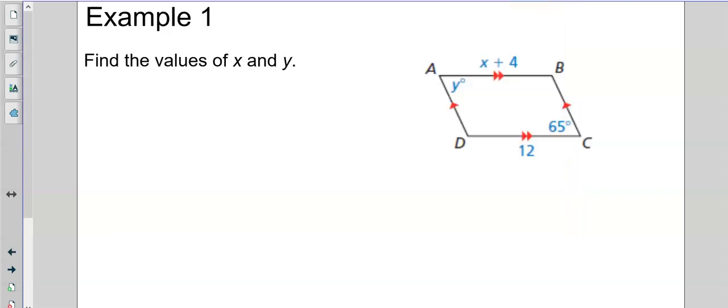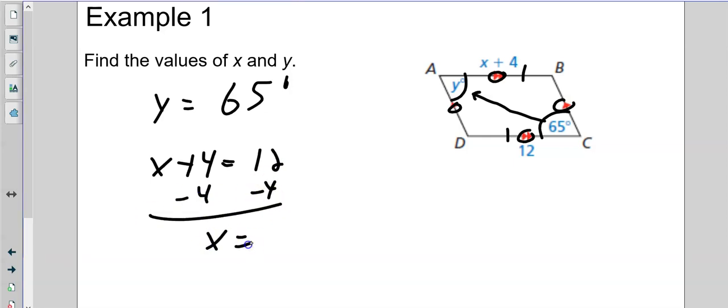So applying this, we have an angle here. The angle directly opposite is over here, so therefore, y is 65. It's the same number. Now, sides. We know this side has to be equal to this side if they are parallel. And we know they're parallel because of these triangle symbols. So that means x plus 4 is equal to 12. The only thing we do here is minus 4, x is 8. Simple enough.